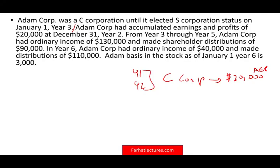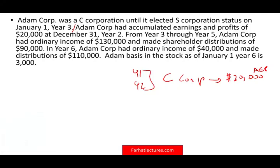From year 3 through year 5, Adam Corp has ordinary income of $130,000 and made shareholder distributions of $90,000. In those years as an S-corp, we made $130,000 of ordinary income and the company distributed $90,000.